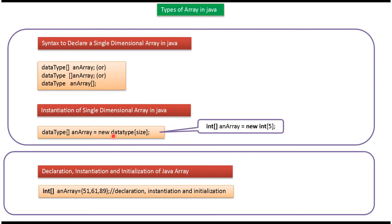Here you can see how to instantiate a single dimensional array. The left side is the declaration part and the right side is the instantiation part. You use the 'new' keyword followed by the data type and the size. For example: int[] intArray = new int[5].